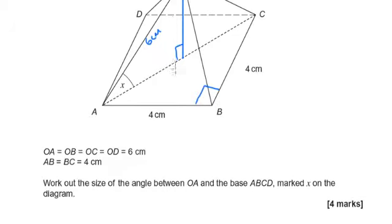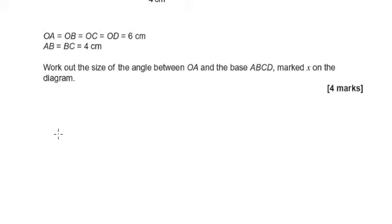But how do we find one of these lengths? I can find the length all the way from A to C because this is a right-angled triangle, so I could use Pythagoras.